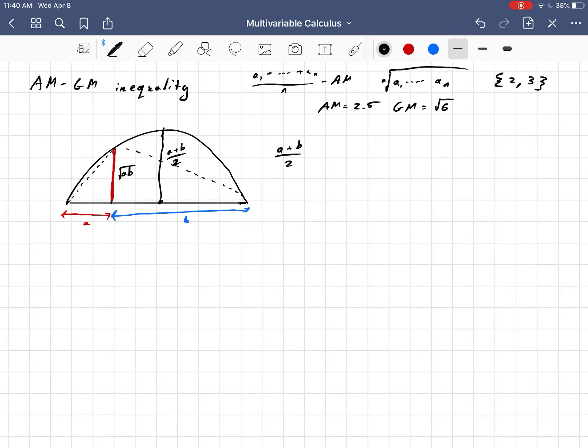So you can clearly see that A plus B over 2, the arithmetic mean, is going to be greater than or equal to the square root of AB, the geometric mean.